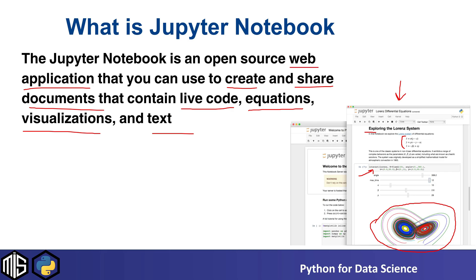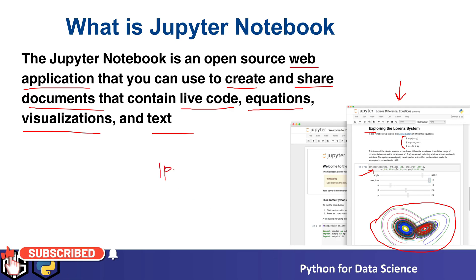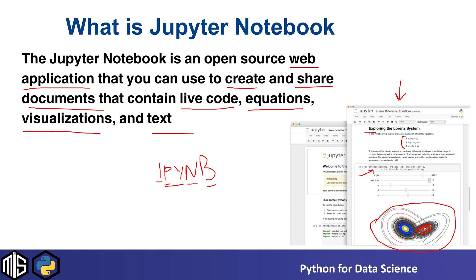Jupyter Notebook is an open source web application that runs on the browser, letting you write text, equations, and code while the visualization appears on the same page. The file format is .ipynb — which stands for Interactive Python Notebook. Previously, Jupyter Notebook was used to code in Interactive Python, but now it's simply called Jupyter Notebook.